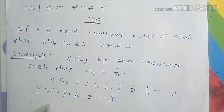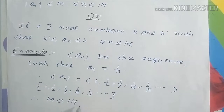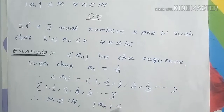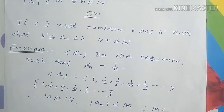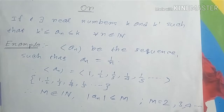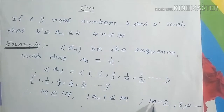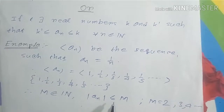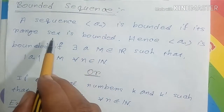In particular, there are many natural numbers M where |a_n| ≤ M. For example, if we choose M = 2, 3, or 4, then all elements of the sequence a_n are less than or equal to M. Therefore we can conclude that a_n is a bounded sequence.